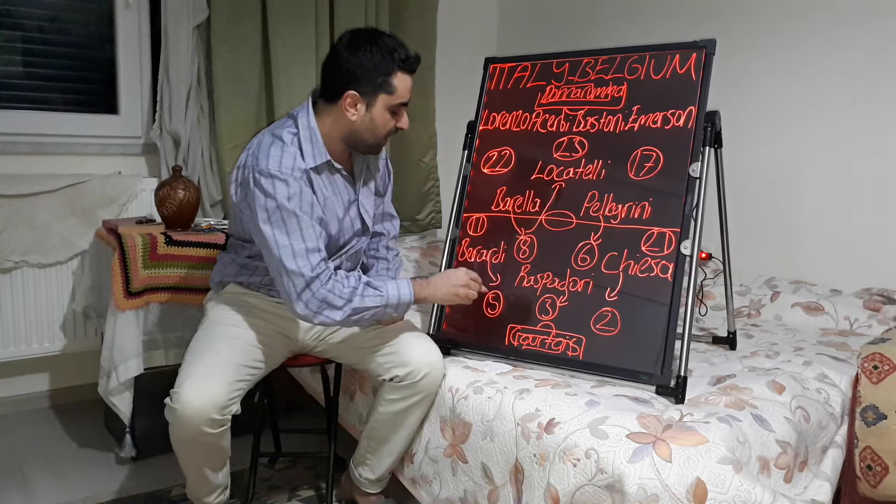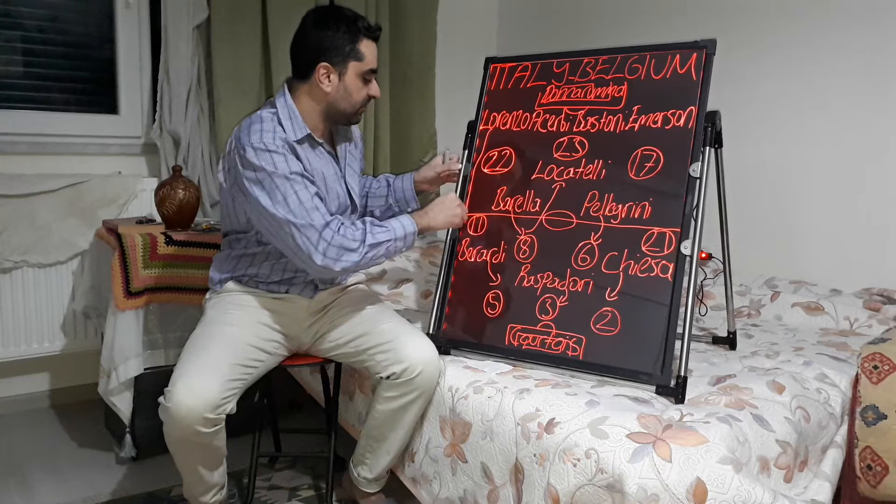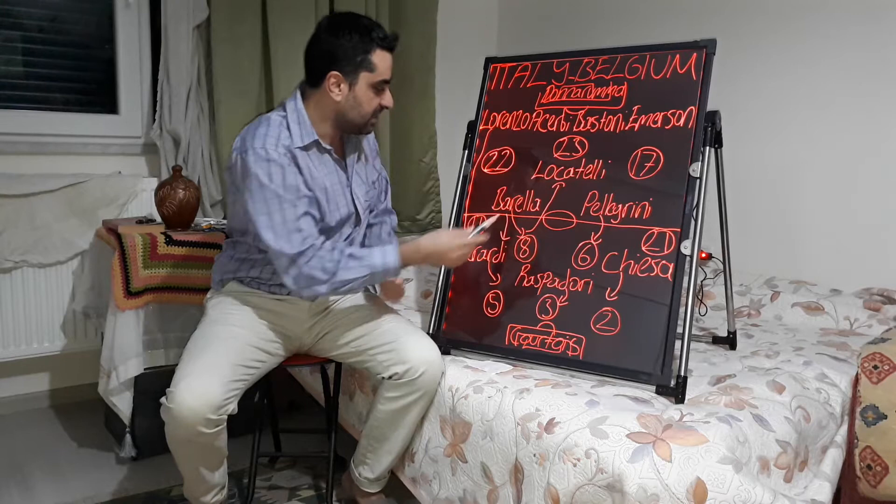When Berardi tucked infield, Di Lorenzo moved higher and wider. He supported the attacks, and at the same time Barella participated in the attacks and supported Berardi on the right.